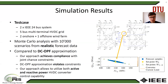We compare our approach to an existing approach using the DC-OPF approximation, and find that our approach achieves compliance with the joint chance constraints whereas the DC-OPF approximation violates the constraints — that is, the empirically observed violation probability is higher than the specified maximum allowable. More importantly, our approach allows utilization of both active and reactive power HVDC converter control capabilities. On the right, for converter C3, we can see that for different realizations of wind farm forecast errors, both active and reactive power are adjusted to maintain security.